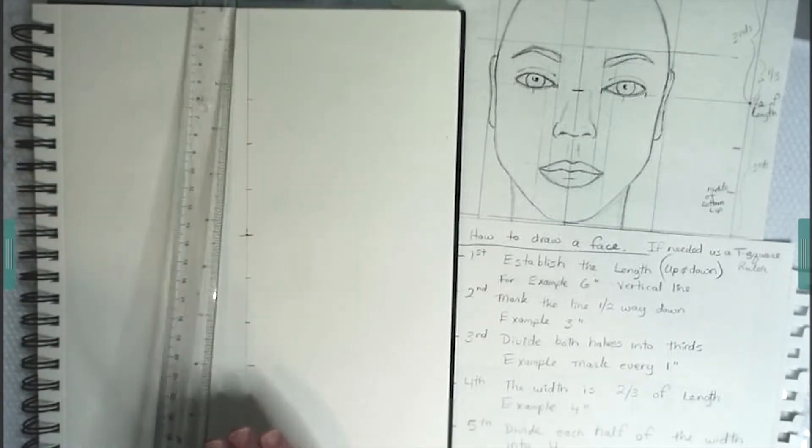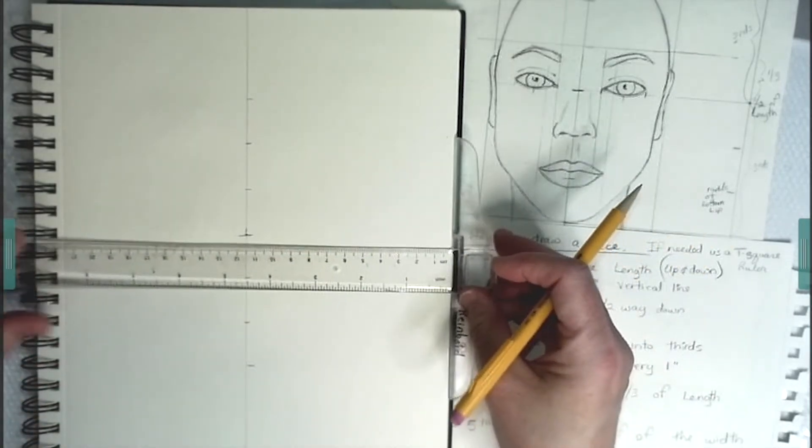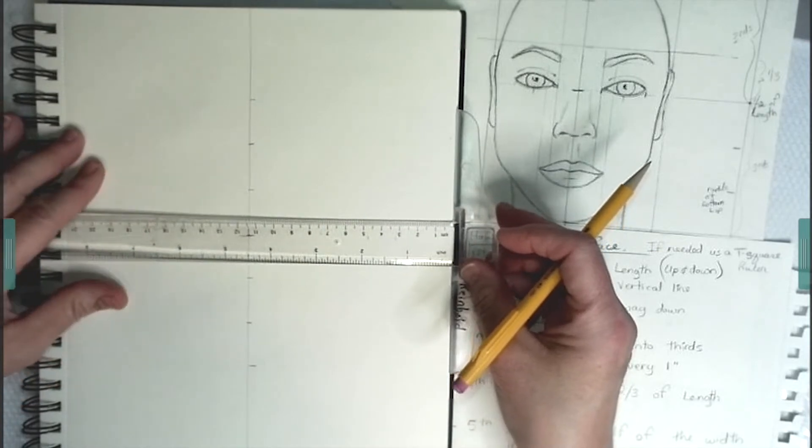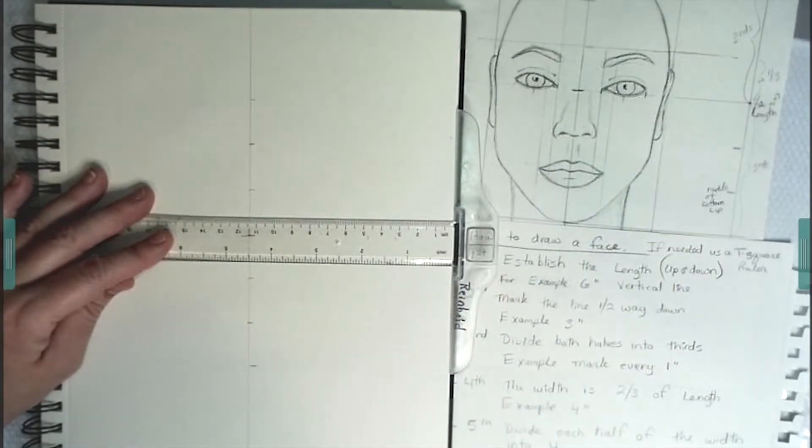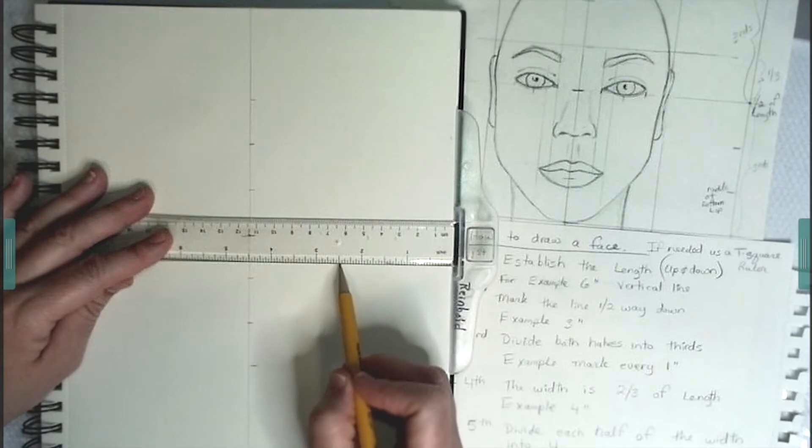All these measurements are going to serve as reference points to different parts of the face. For the width of the face, it'll be two-thirds of length. So that would be four inches across.